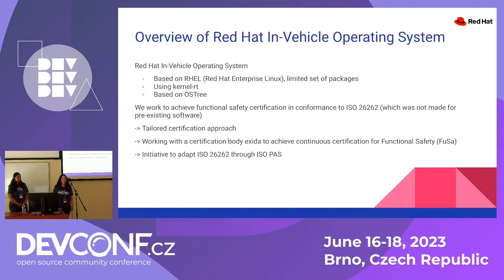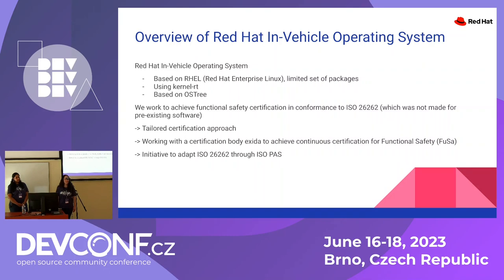So what is the in-vehicle operating system? It's a smaller footprint of RHEL. We are inheriting everything from RHEL except the kernel. The kernel is the only package we're rebuilding for hardware enablement — we're using the RT kernel. It's based on OSTree, which is very common with running OSTree in embedded systems. We're working to achieve functional safety certification to conform to the ISO standard. It wasn't really made for pre-existing complex software, but there is an initiative to adapt ISO 26262 through an ISO pass to complement that better.